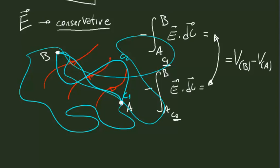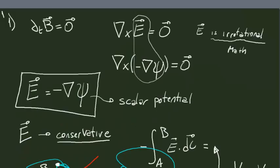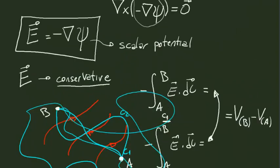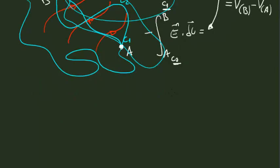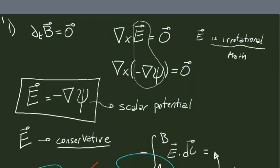The integral of the electric field does not depend on the path of integration — whether I take C1, C2, or any other path. It only matters that I start at point A and finish at point B. This is only true if my field is conservative, and my field is conservative only if it is irrotational — meaning this is only true under quasi-static conditions. In general, when there is a time-changing magnetic field, these two integrals are different, which is something we have seen in demonstrations during lectures. This is the first interesting consequence of the quasi-static approach.